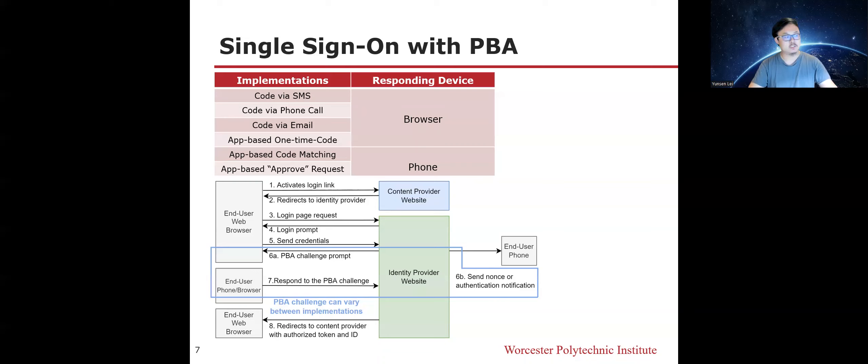These phone-based authentication systems make two key assumptions: first, the nonce will not be revealed to an adversary; and second, the legitimate user will only respond to the challenge of their own authentication attempts. However, if either assumption is violated, the phone-based authentication system will fail to achieve its authentication goals. I will now show two attacks that violate these assumptions.